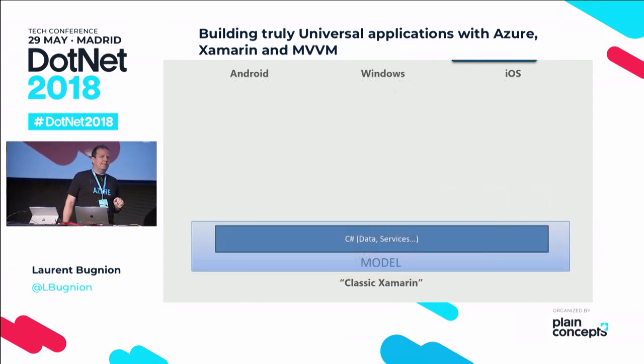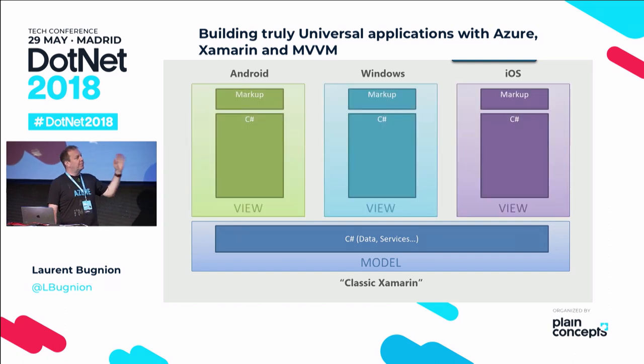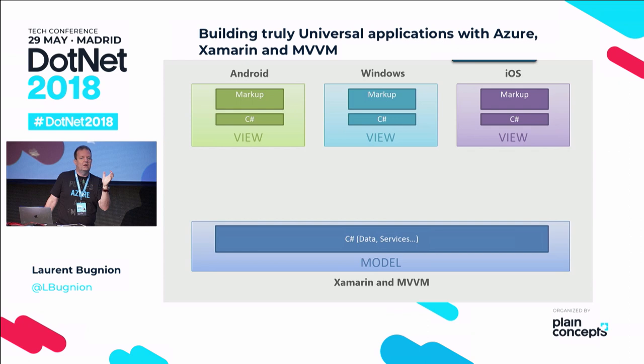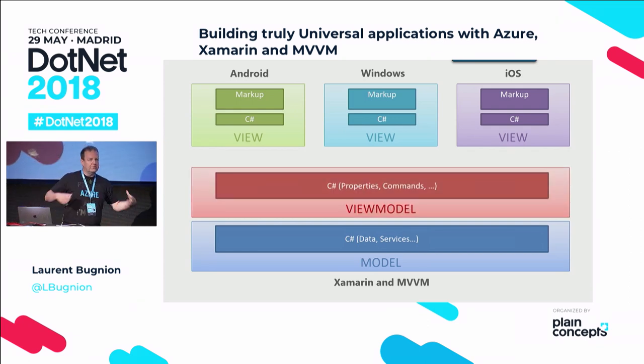In a classic Xamarin application, you have the model which is shared — potentially 50% of code. But on top of that you still have three silos: one for Android, one for Windows, one for iOS. It's still C#, but it's three different codebases. What we want to do is reduce those silos by adding a shared view model layer with data binding in between for interaction. Let me show you a demo. I'm going to take an Android application and refactor it to MVVM.